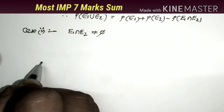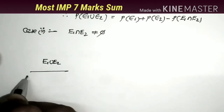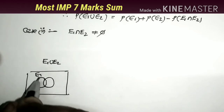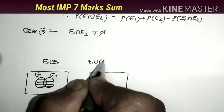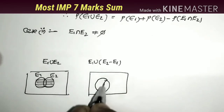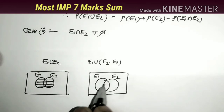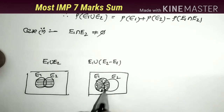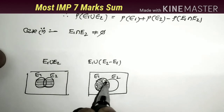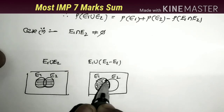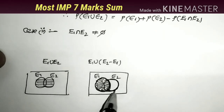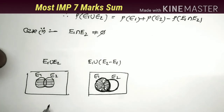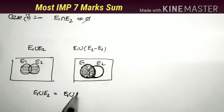From the Venn diagram, E1 ∪ E2 represents the combined region of both sets. For E2 - E1, we subtract E1 from E2, leaving only the part of E2 not in E1. When we take the union of E1 and (E2 - E1), we get back E1 ∪ E2. This confirms Formula 1: E1 ∪ E2 = E1 ∪ (E2 - E1), where E1 and (E2 - E1) are disjoint sets.